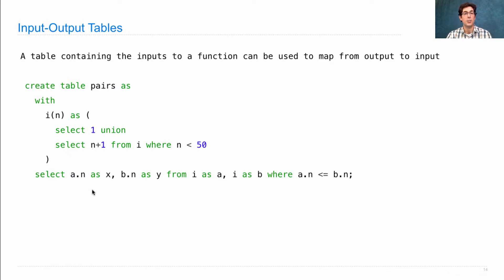Then we select two columns, a.n and b.n, as x and y, from the integer table twice. And in this case, we'll make sure that we don't get repeats by having a.n less than or equal to b.n. So we only have 2, 3. We don't have 3, 2.